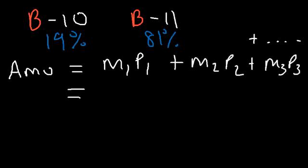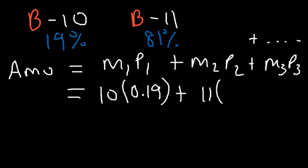But we only have two isotopes. The mass of the first isotope is 10, and 19% as a decimal, if you divide 19 by 100, it's 0.19. And then the second mass, which is 11, times the percentage, which is 0.81.